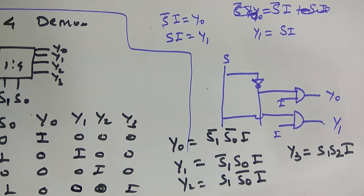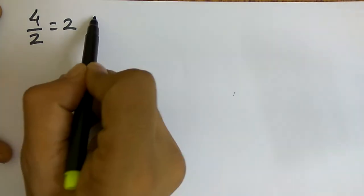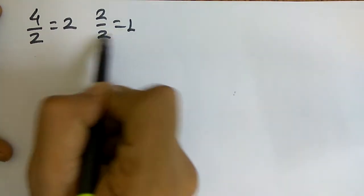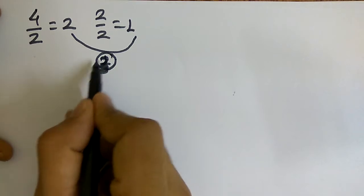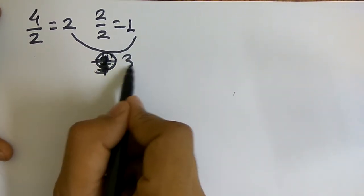We will see how to implement the 1-to-4 DEMUX using 1-to-2 DEMUX. We follow the same procedure as we have seen in MUX. First divide 4 by 2, which gives 2, and then 2 by 2 gives 1. So the total number of DEMUX required is 3.